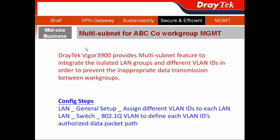The JetClack Vigor3900 also supports the multi-subnet feature. It can isolate the different LAN groups by different VNIDs to prevent inappropriate data transmission between workgroups.